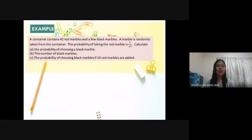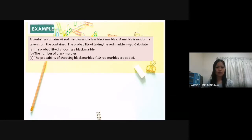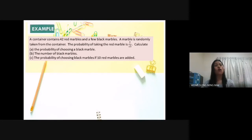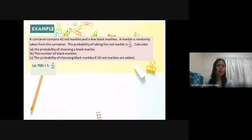Next example: A container contains 42 red marbles and a few black marbles. A marble is randomly taken from the container. The probability of taking a red marble is 7 over 15. Calculate (a) the probability of choosing a black marble. Using the complement formula: P(black) = 1 − 7/15 = 8 over 15.